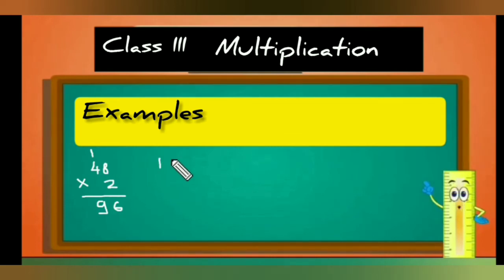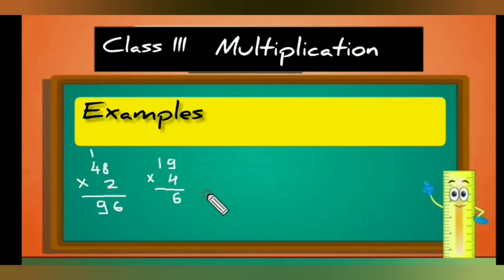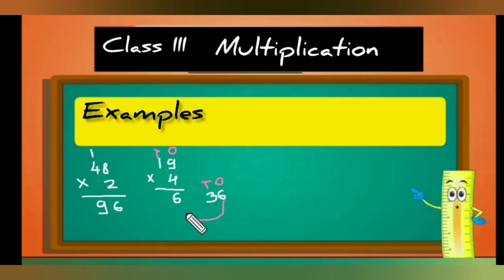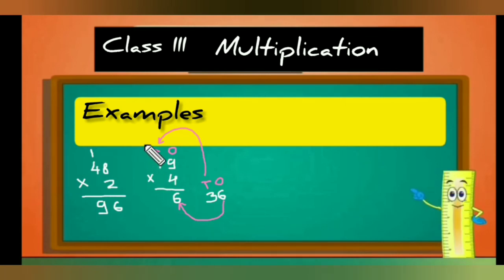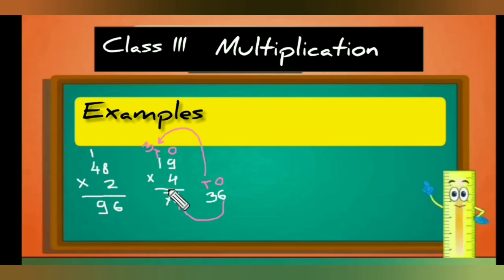Next example: 19 multiplied by 4. Four multiplied by 9 — nine 4s are 36 — so we write 6 at the ones place and carry 3 to the tens place. Then four multiplied by 1 is 4, plus carry 3 equals 7. So the answer is 76. If it's going too fast, please comment below the video.